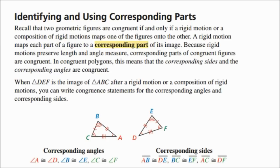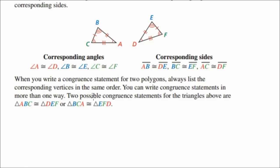Looking at these triangles, I have triangle ABC and triangle DEF. I can map those two images on top of each other so that angle A is congruent to angle D, angle B is congruent to angle E, etc. One important thing to note is that when you write a congruent statement for two polygons, you always list the corresponding vertices in the same order. So if you have triangle ABC, you have to call it triangle DEF.